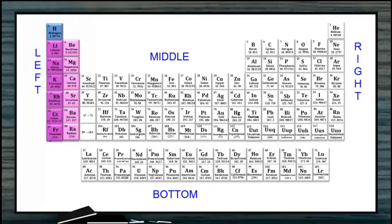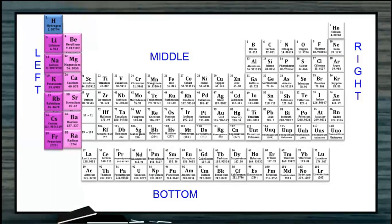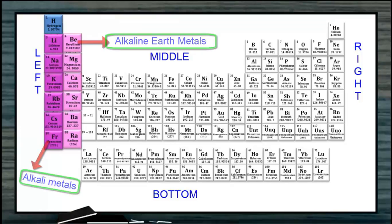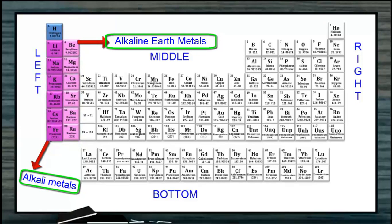Coming to the periodic table, you can see that the left portion is occupied by the S-block elements — that is, the first group and second group: alkali metals and alkaline earth metals.